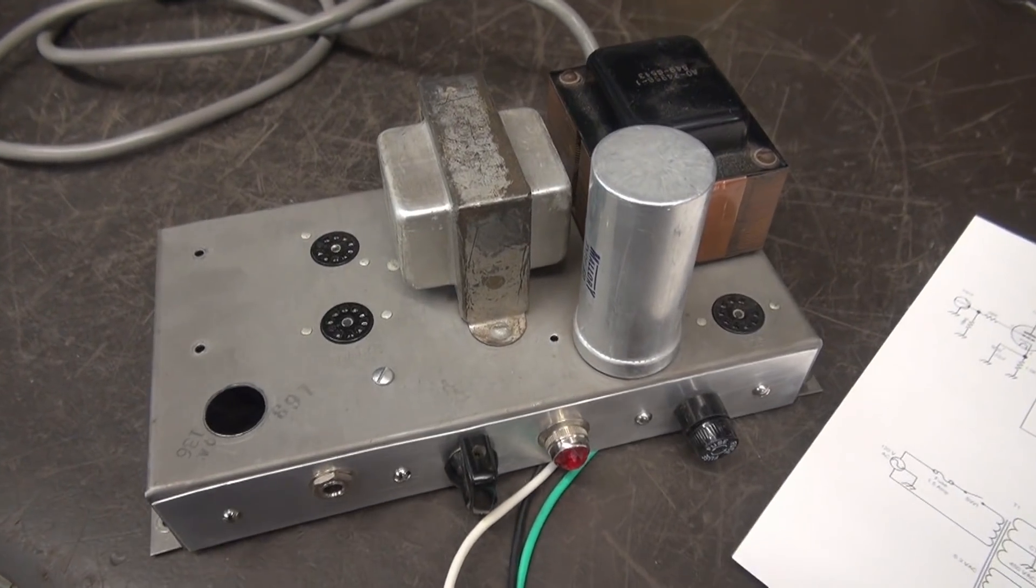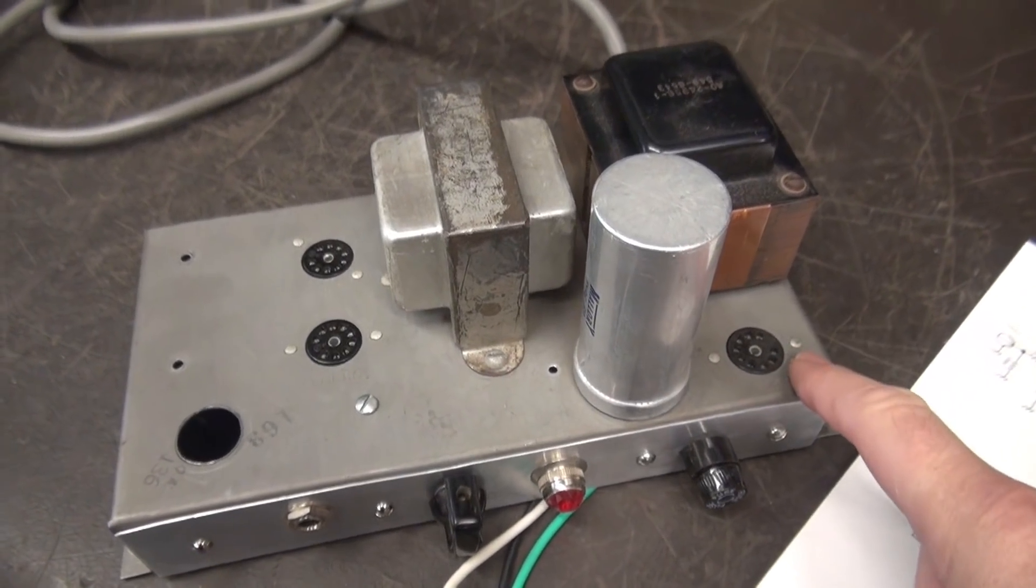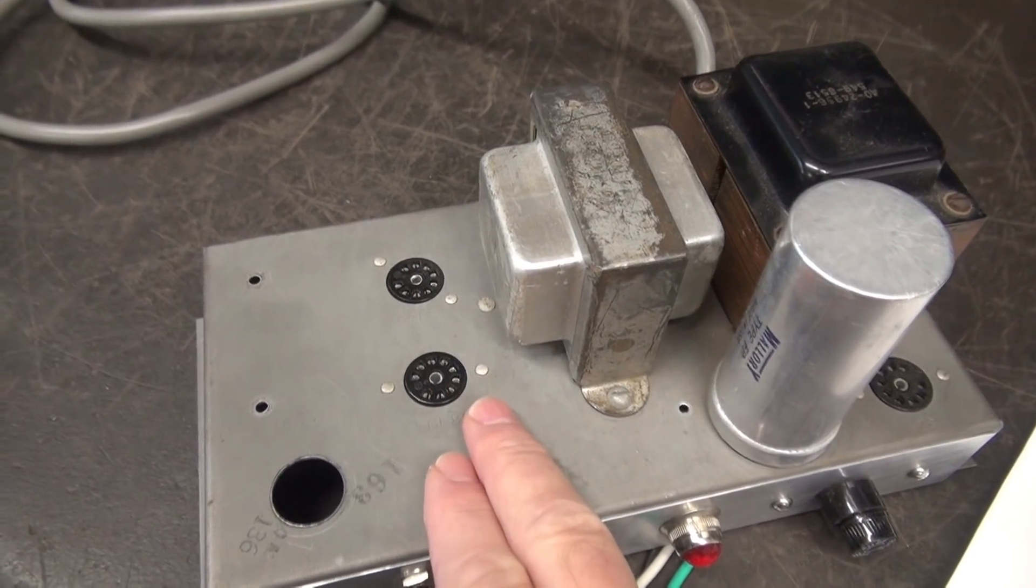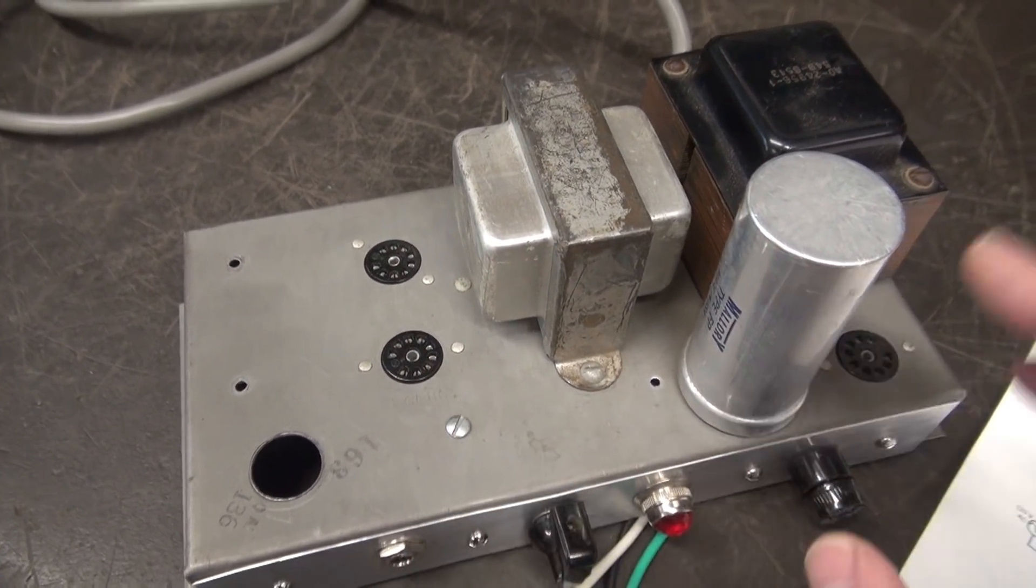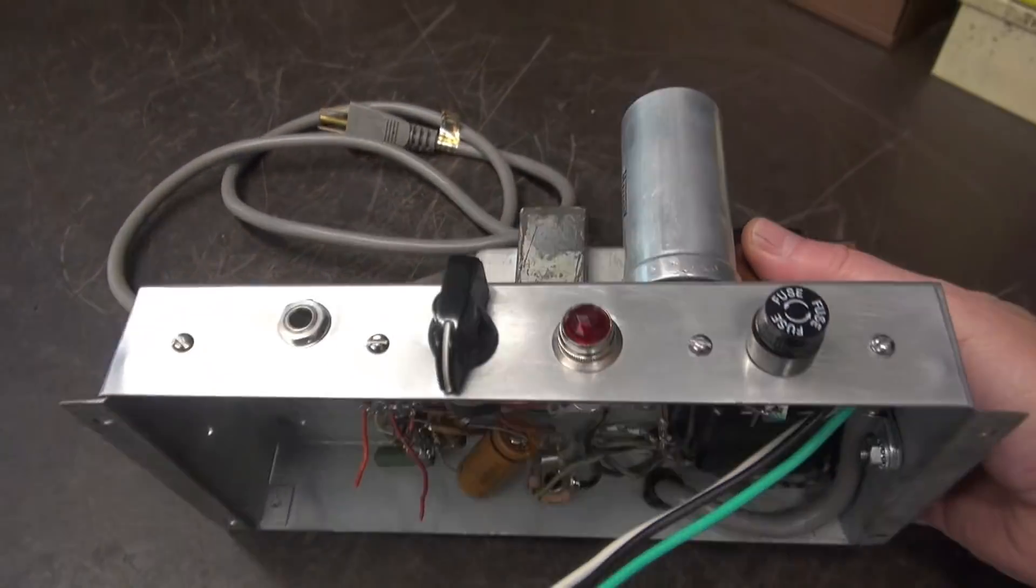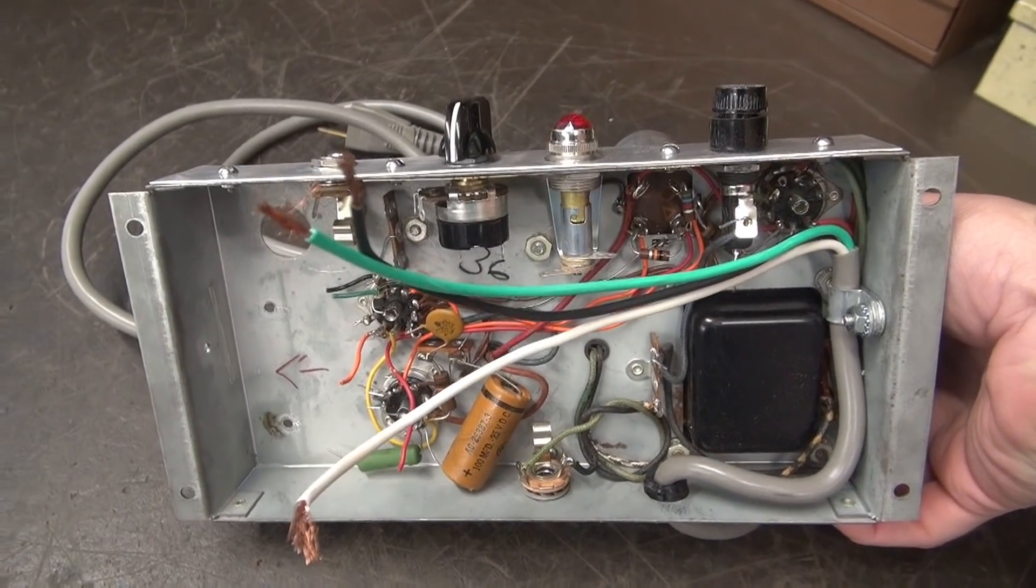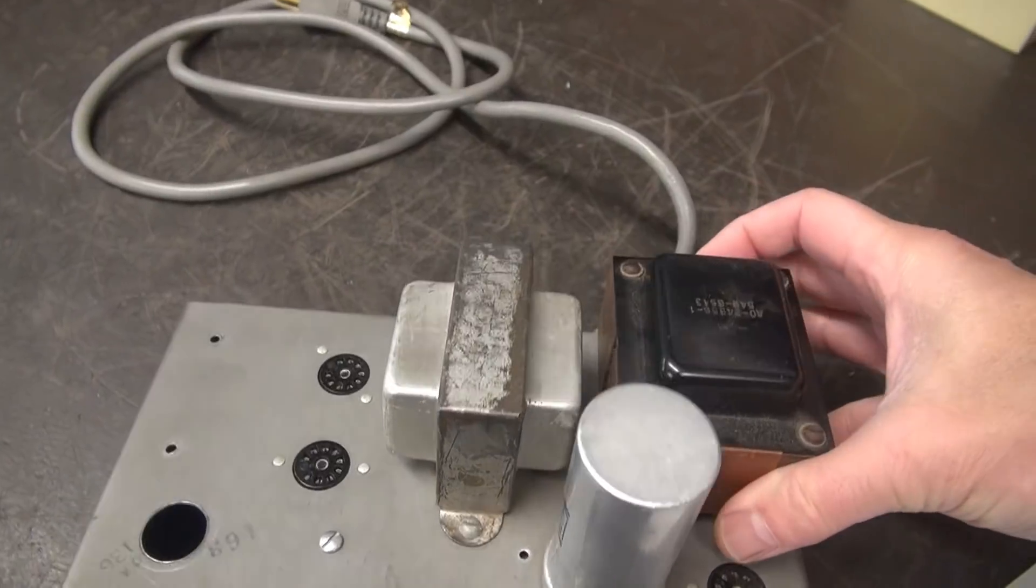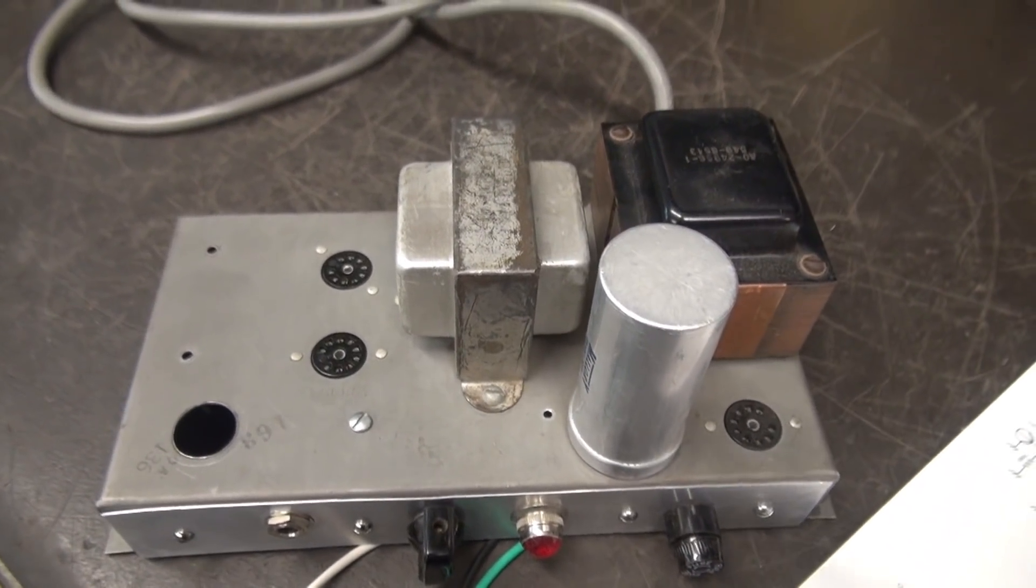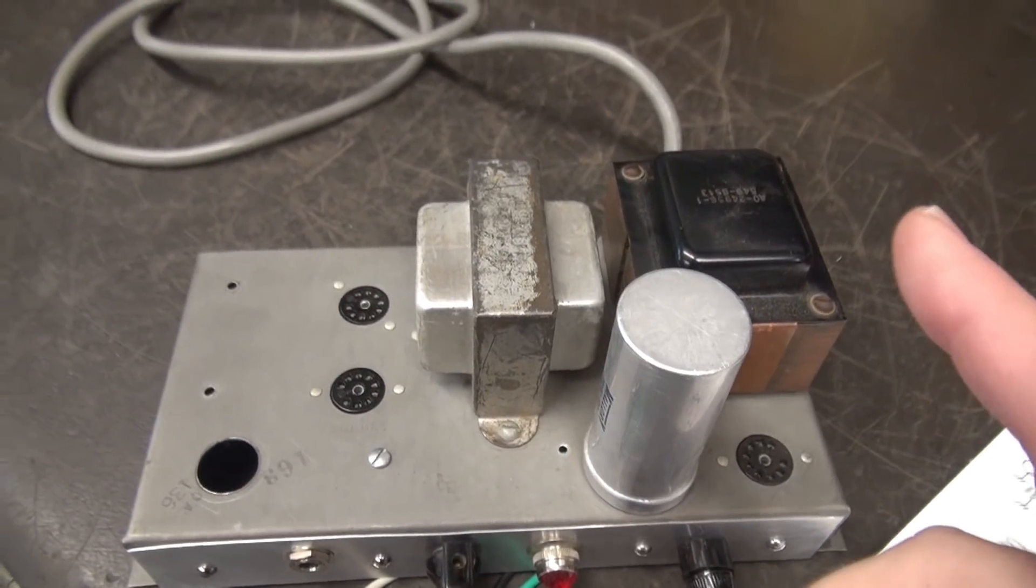So here's the amp. It normally ran a 6CA4 rectifier tube and a pair of 6GW8 tubes. This one is in kit form right now. Somebody was converting it, carved everything out, but never finished it. So they sent it to me and said, I'd rather have this use a pair of 6BQ5s because they're readily available. So that's what we're going to do.